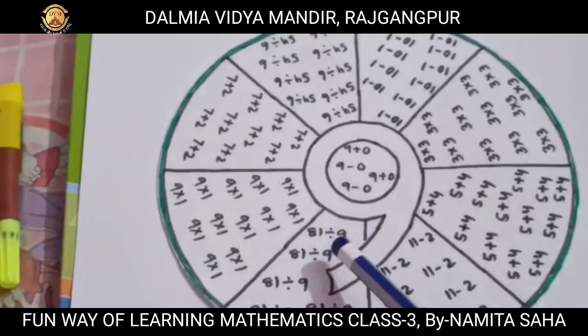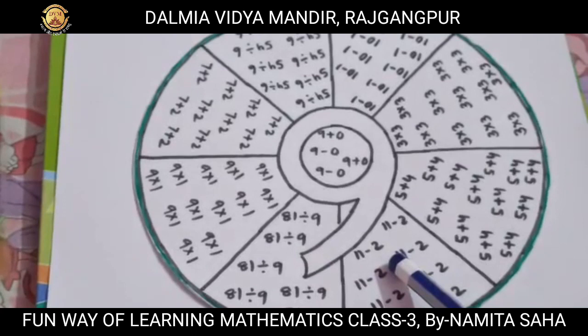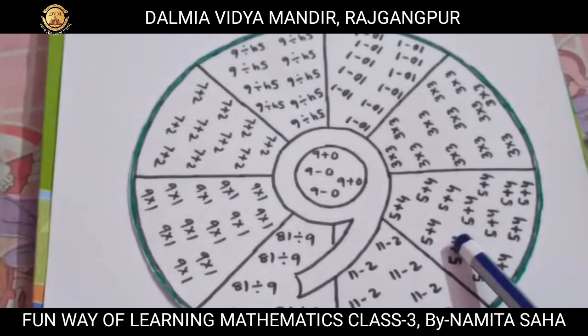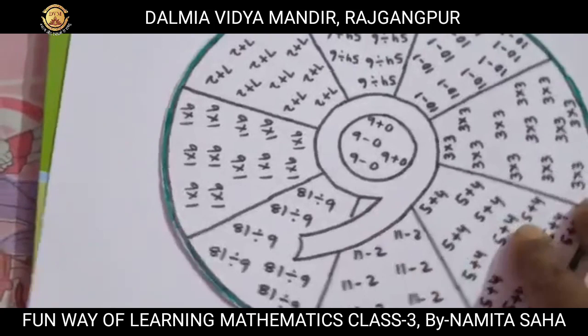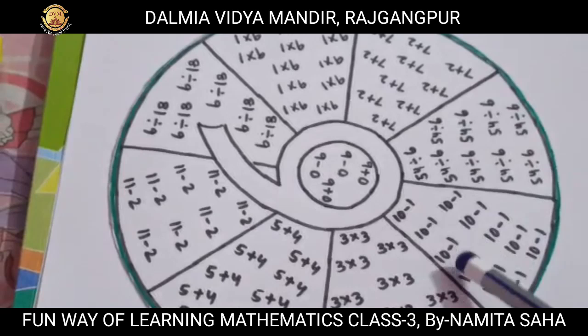9 can be represented as 81 divided by 9, which gives you the value 9. 9 can be written as 11 minus 2. 9 can also be represented as 5 plus 4. In the same way, you can also write 3 into 3. I can show you here — 9 can be written as 3 into 3.